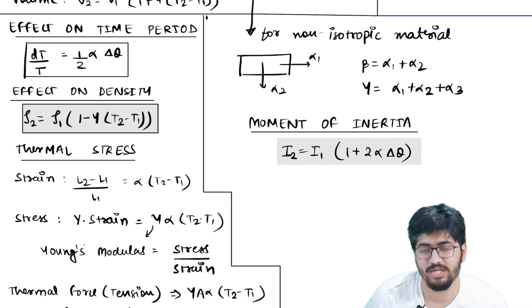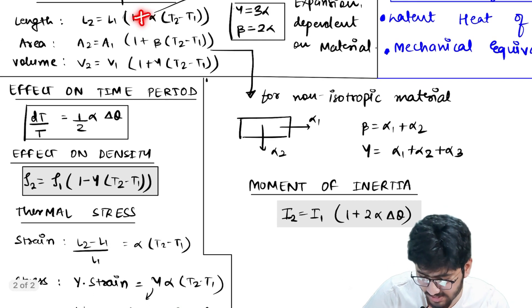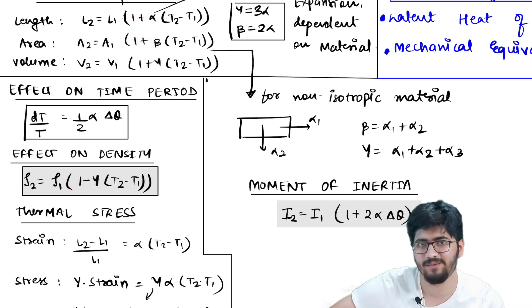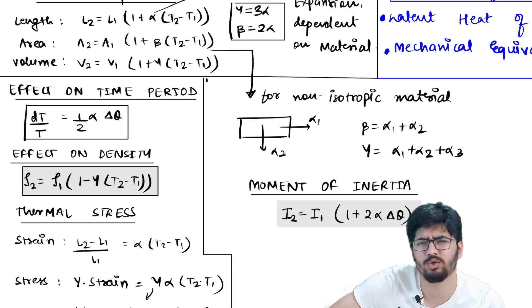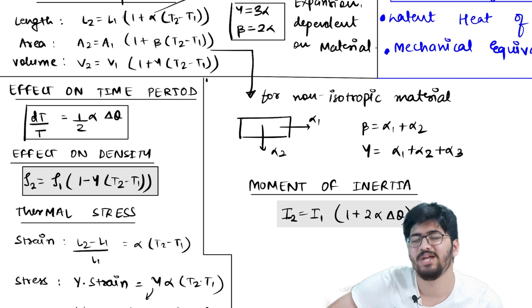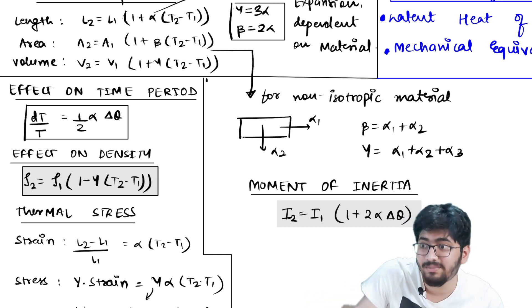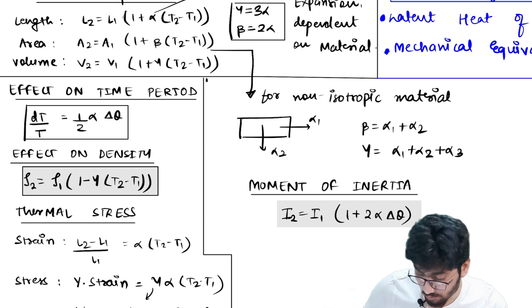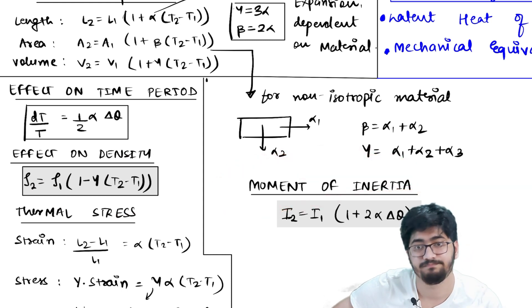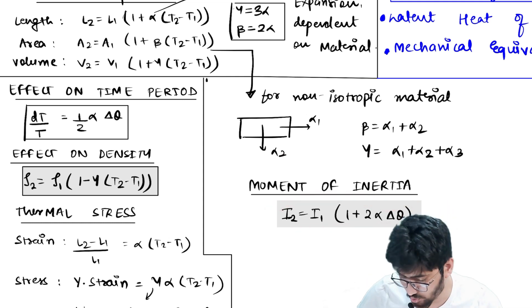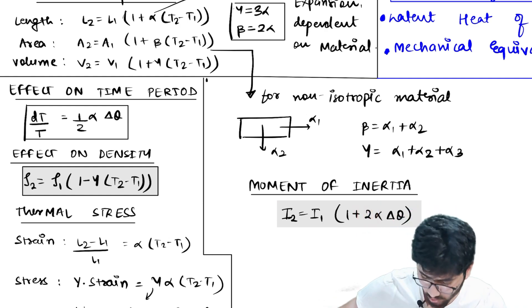Next, effect on density: ρ2 = ρ1(1 - γ·ΔT). Notice the minus sign here, unlike the plus signs in the expansion formulas. This makes common sense — if you increase temperature, density decreases. For example, honey taken out of the fridge is very thick and dense, but if you heat it, it becomes much less dense and flows easily.